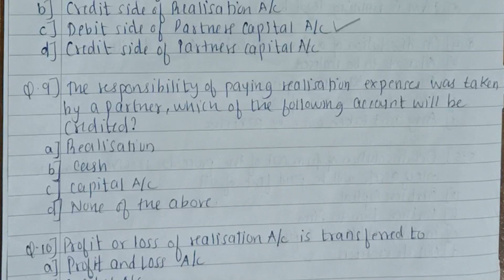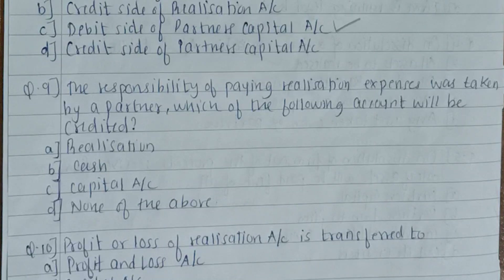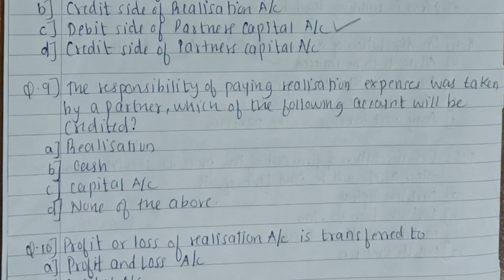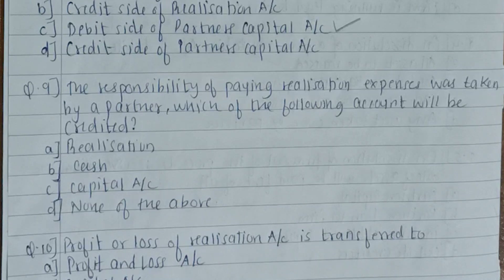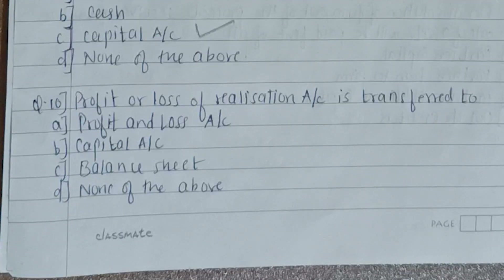Ninth question: the responsibility of paying the realization expenses was taken by a partner — which account will be credited? Realization expenses and dissolution expenses are the same; these are expenses incurred while dissolving the partnership firm. If a partner agrees to pay the realization expenses, the capital account of that partner will be credited, because the partner is paying for it. The answer is capital account of the partner.